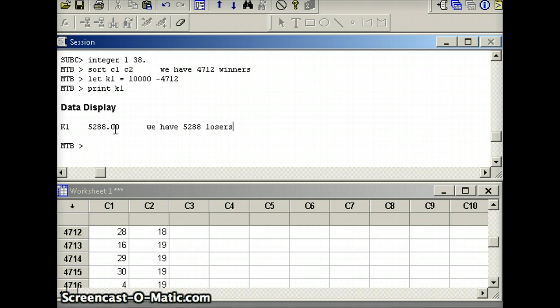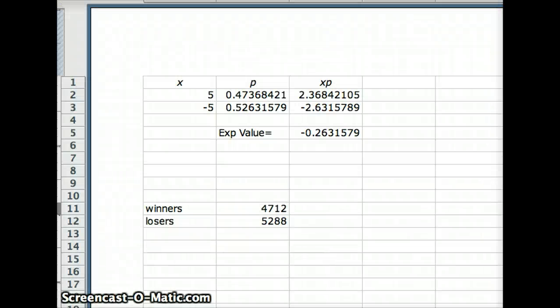Our question will be, on average, how much did we lose for every game played? We have 4712 winners and we win $5 for every time we play. We have 5,288 losers, so we lose $5 for every time we lose. Our total winnings are going to be the product of those numbers. We won a total of 23,560, but we lost a lot more.